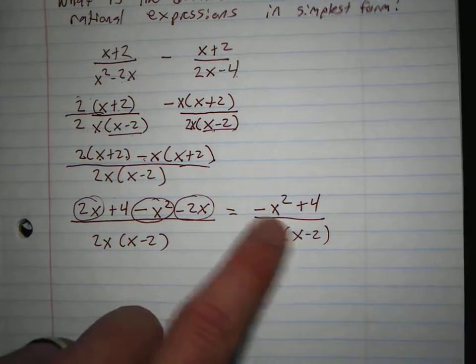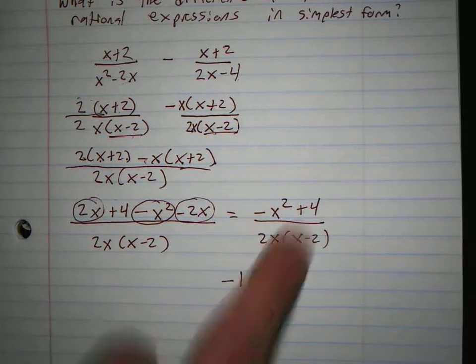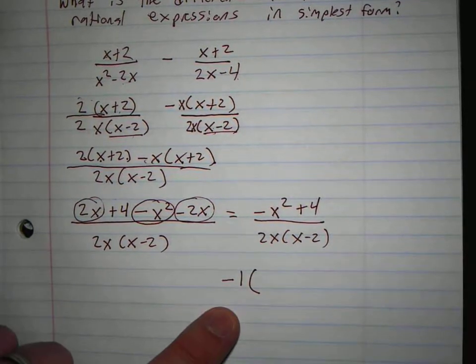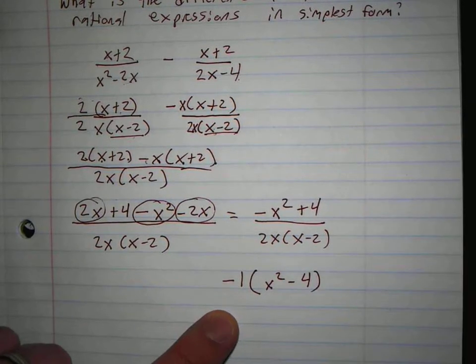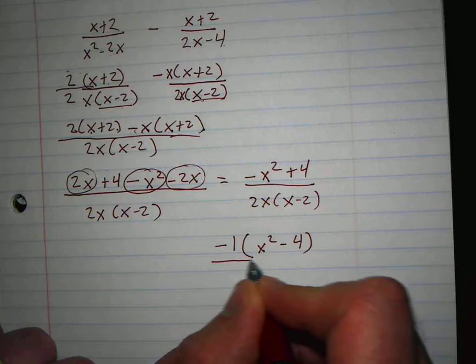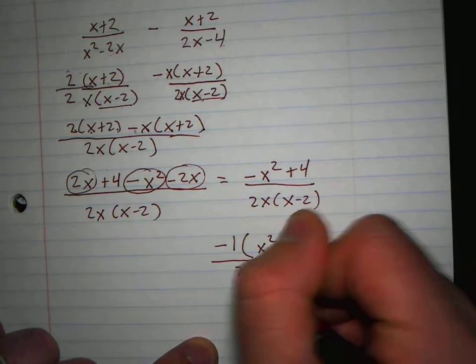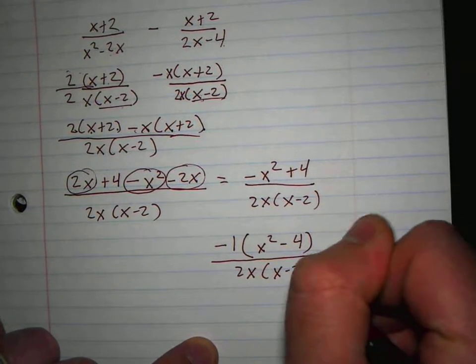Okay, because if you take a negative from something, that changes that to a positive and that to a negative. So that becomes x squared minus 4, all over 2x, x minus 2.